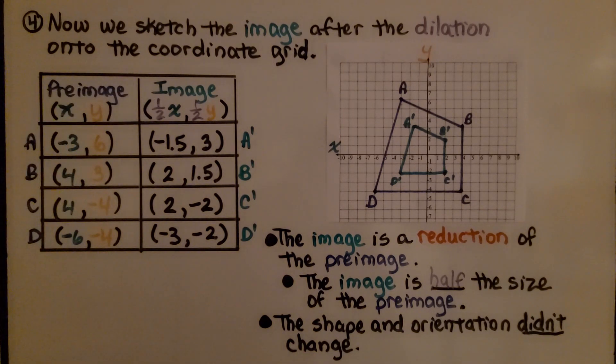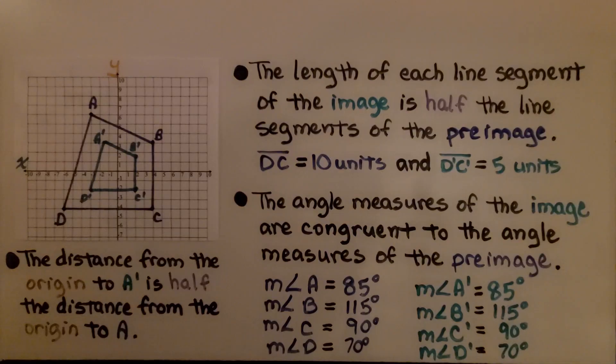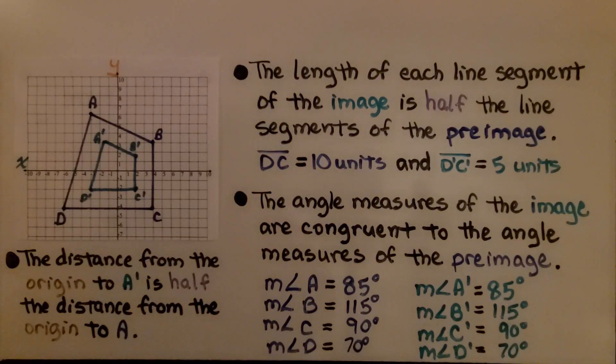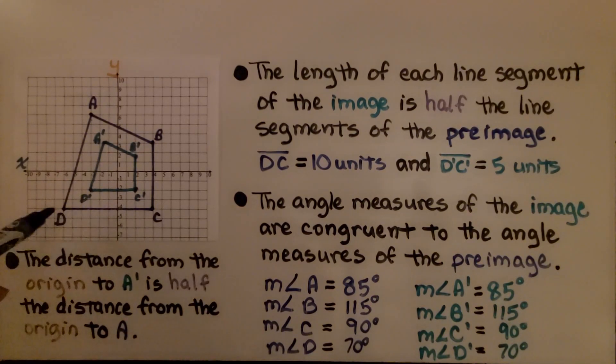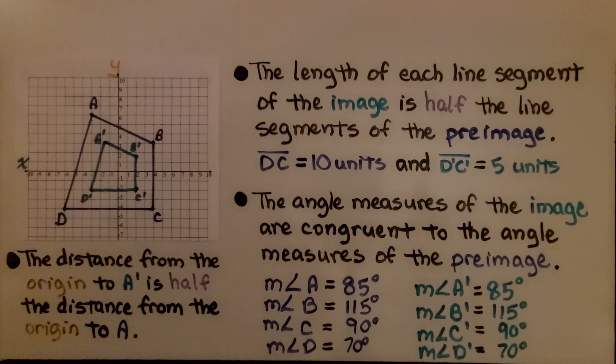The image is half the size of the preimage. We know it's half. That's what the scale factor was. The shape and orientation didn't change.